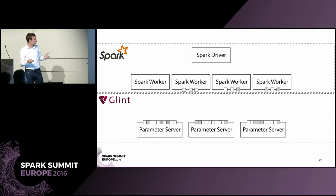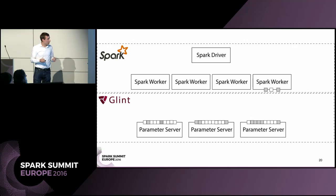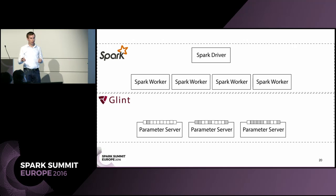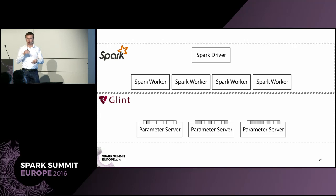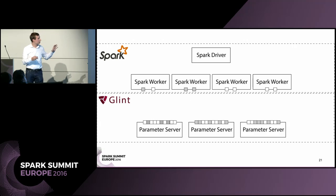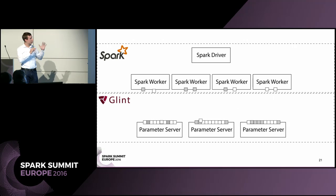Glint is designed to be fully asynchronous, so all pull and push requests happen asynchronously. You can do all of them at the same time — you can pull, you can push, you can do computation simultaneously. So we have simultaneous pulls and pushes while computation is going on.